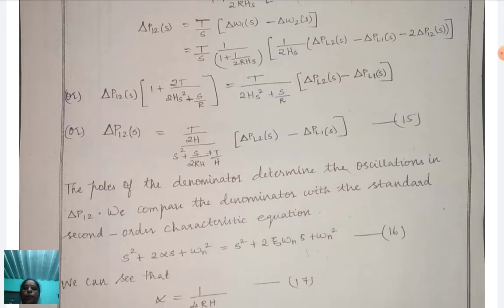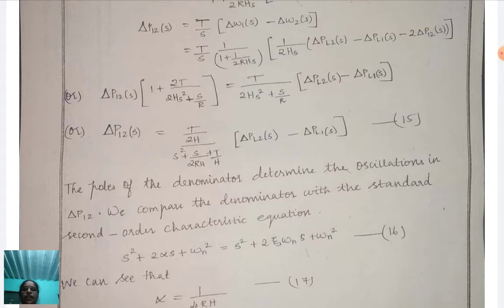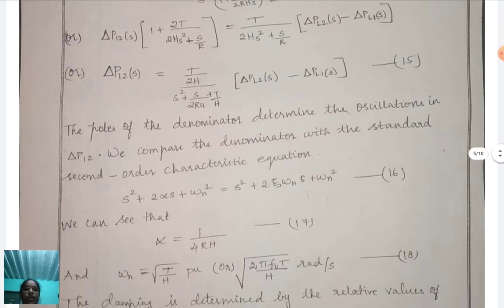The poles of the denominator — that is, s² + s/(2RH) + T/H — determine the oscillations in del P_12. This denominator represents a second-order system. So the poles of the denominator determine the oscillations in tie-line power del P_12, and we compare the denominator with the standard second-order characteristic equation.